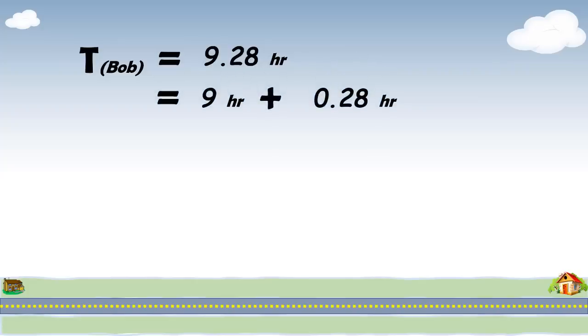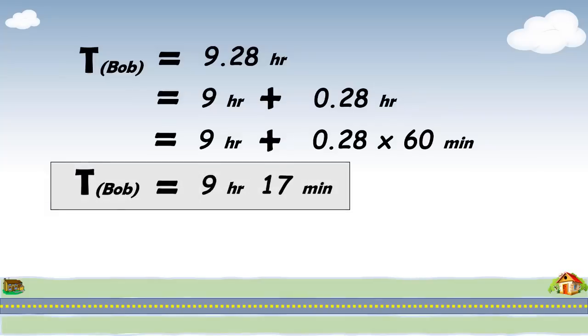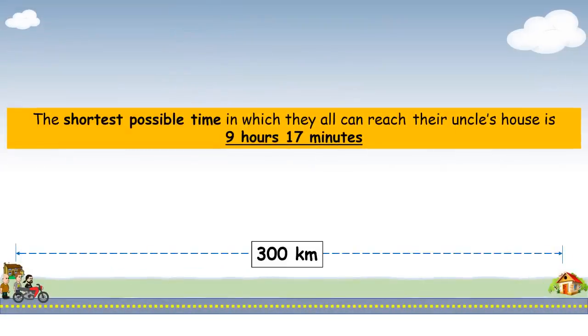We get the value of time taken as 9.28 hours. We can also show it in the form of hours and minutes, approximately equal to 9 hours and 17 minutes. You can also cross verify the time for Alex and Karl and you must get exactly the same value of time for each of them. So, the shortest possible time in which they all can reach their uncle's house is 9 hours 17 minutes.